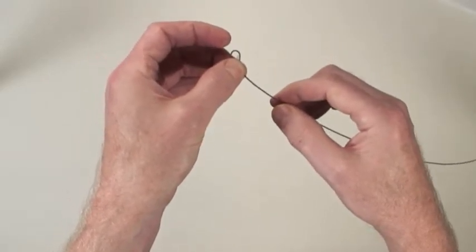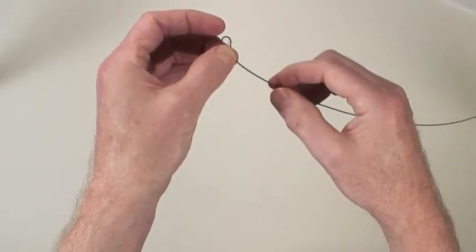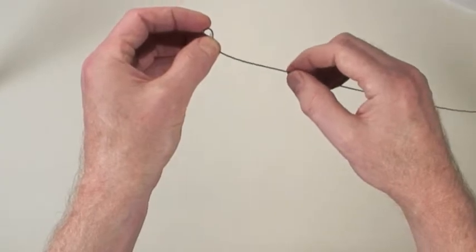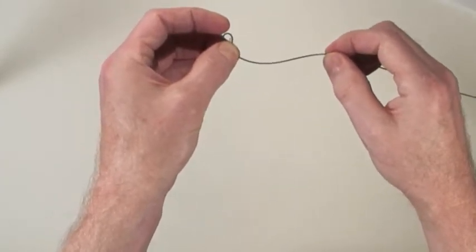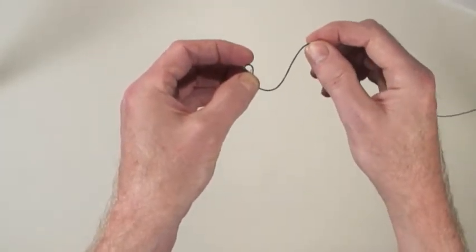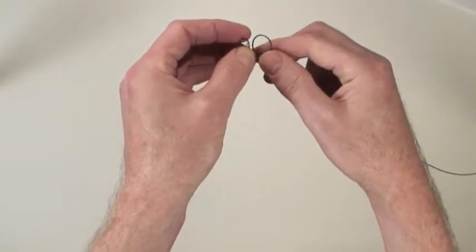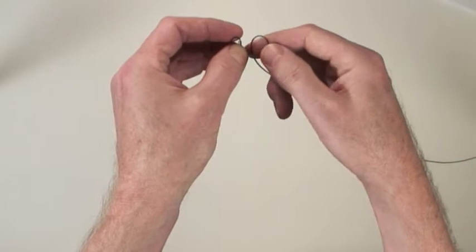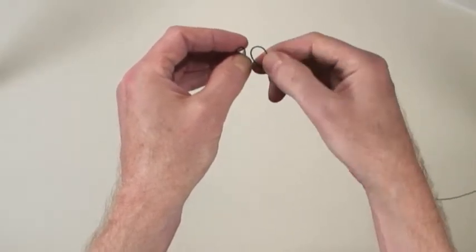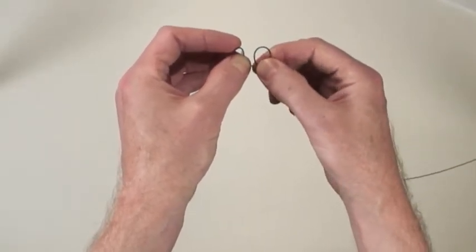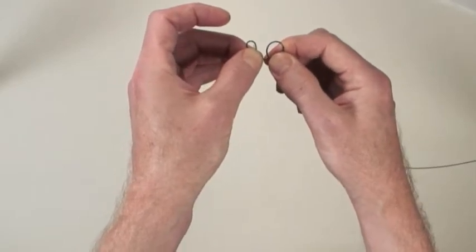Now I'm going to create the second of the two identical loops. Once again with my right hand, I'm going to bring it a little bit behind my left hand, creating the loop. There you can see what the loop looks like.